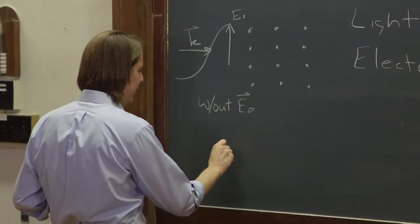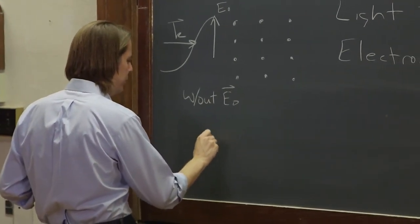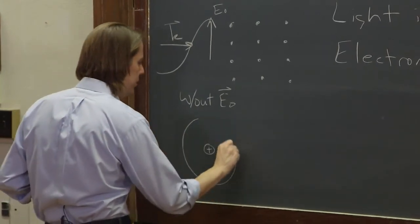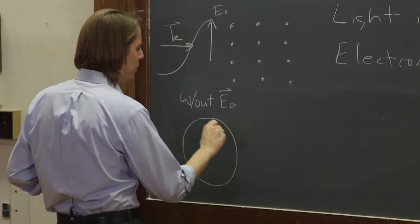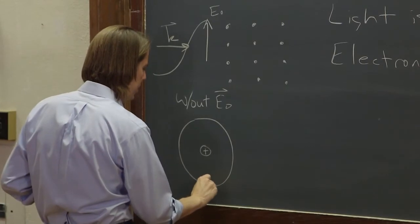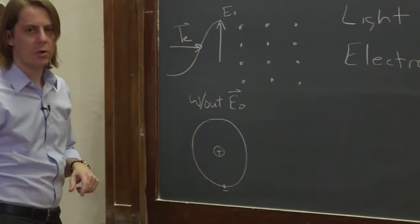So we could say, without E naught, it was just happy. Everything was fine. There was a positive nucleus. And the electron cloud, we could imagine for this material, was nicely centered right around the nucleus.